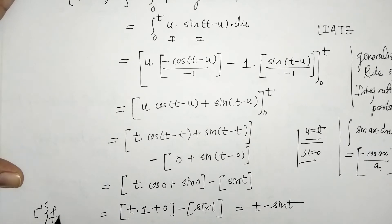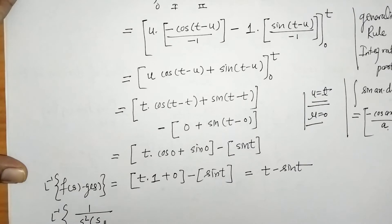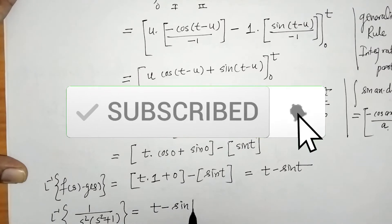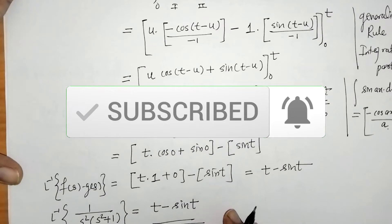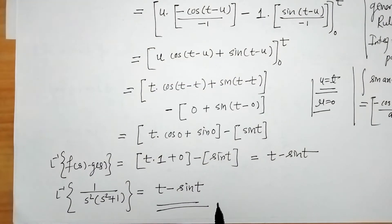So we found that L⁻¹{1/(s²·(s² + 1))} = t - sin(t). This is the inverse Laplace transform of the given function, found by using the convolution theorem.